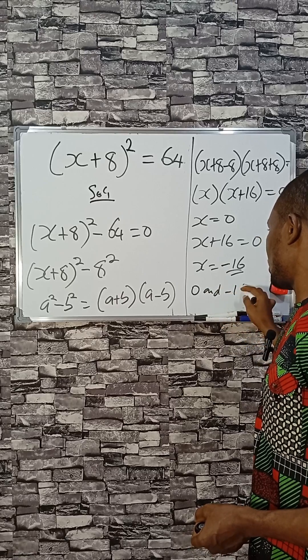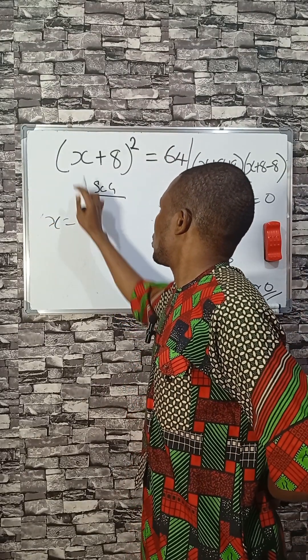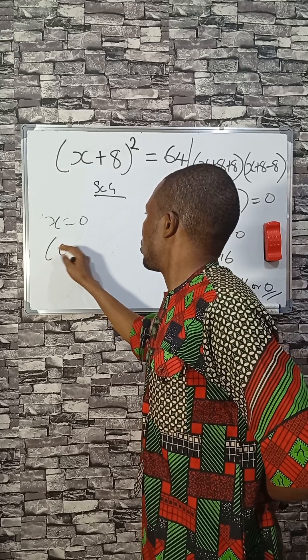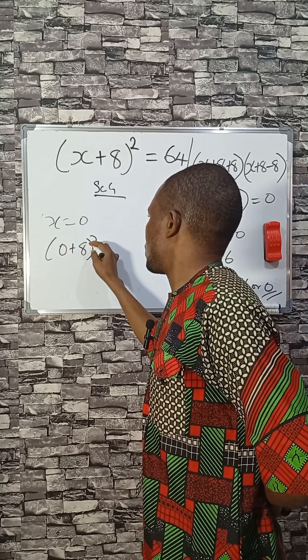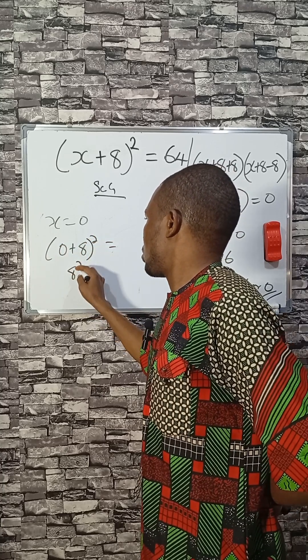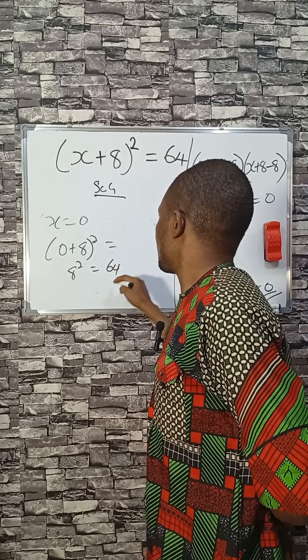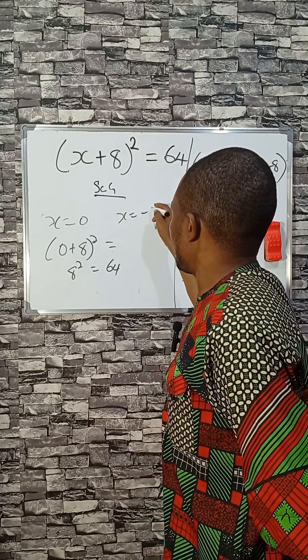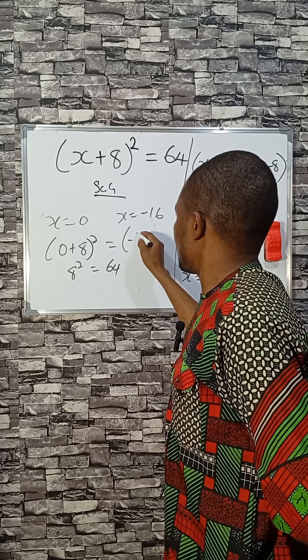If X is equal to zero, it means you have here (0+8)², which is 8 squared, and that is 64.